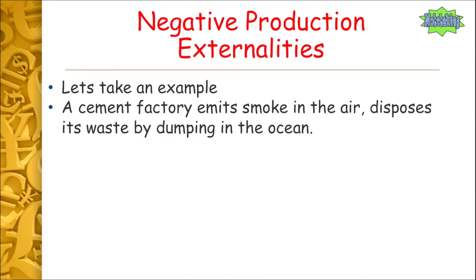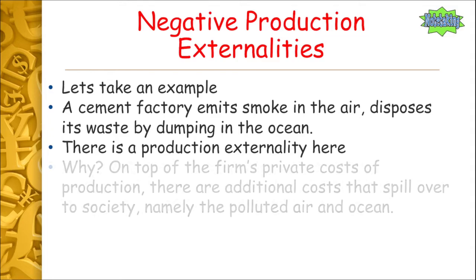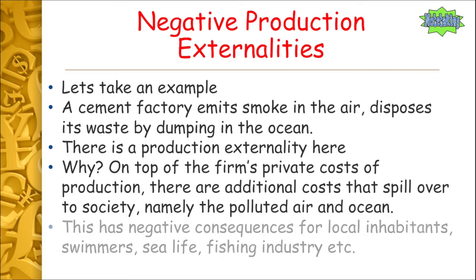Let's look at an example. Take a cement factory that emits smoke into the air and disposes its waste by dumping it into the ocean. There's obviously a production externality here. On top of the firm's private cost of actually making the cement, there are additional costs that spill over to society — the polluted air and the dumping into the ocean.